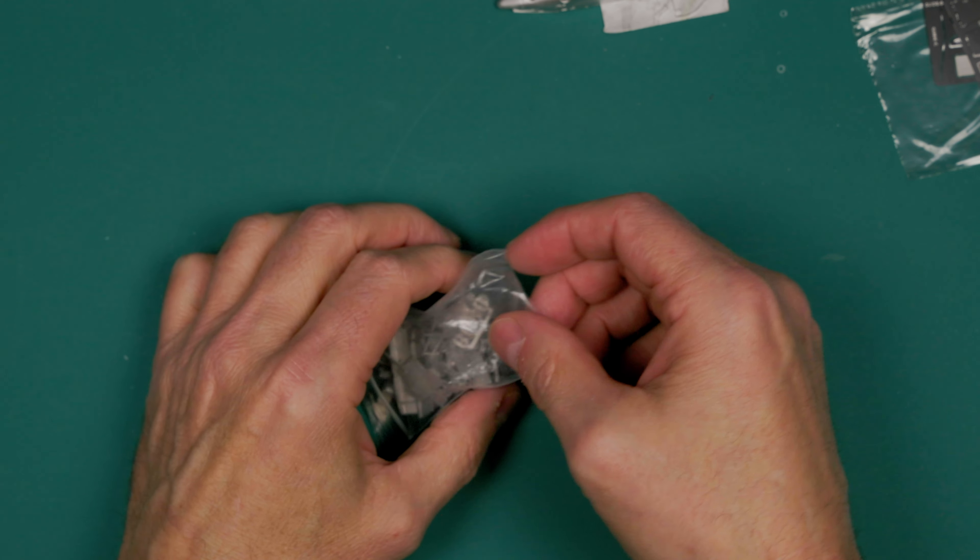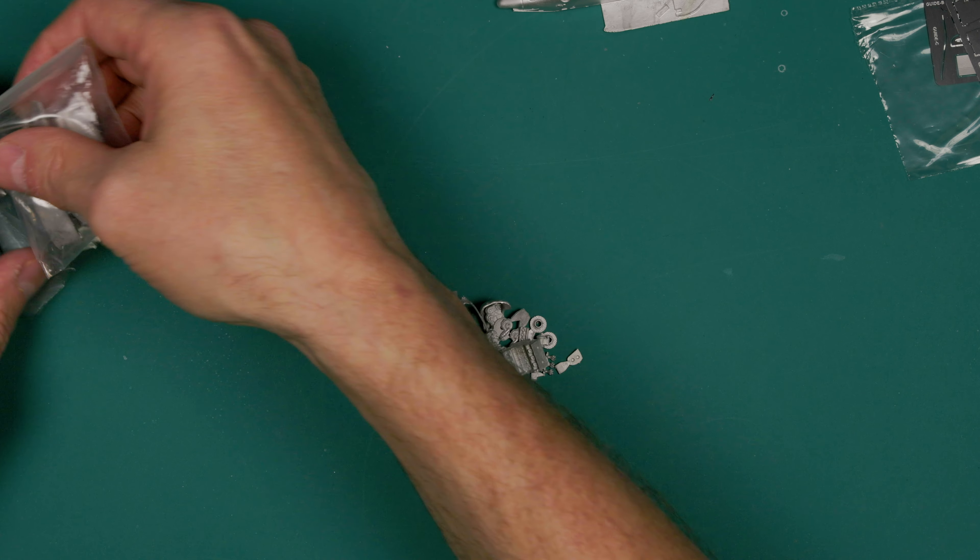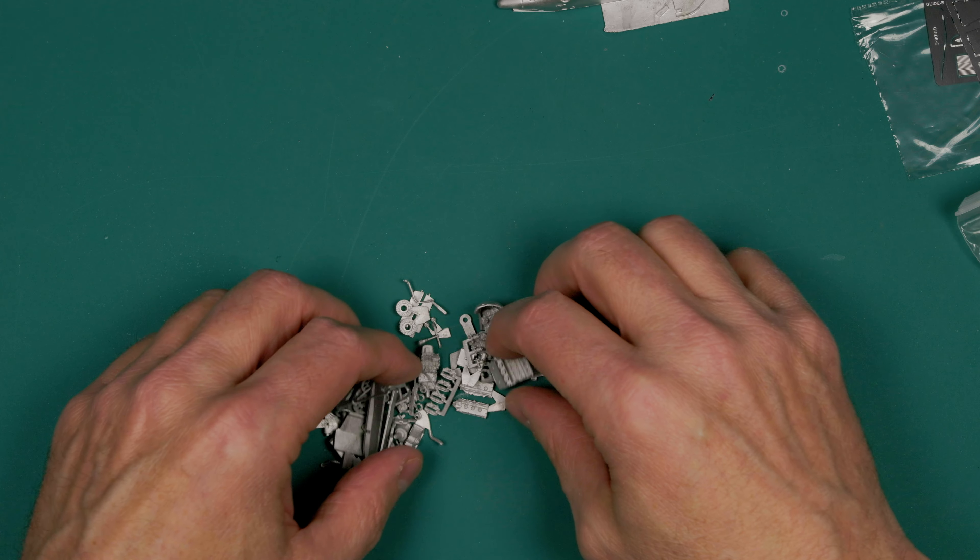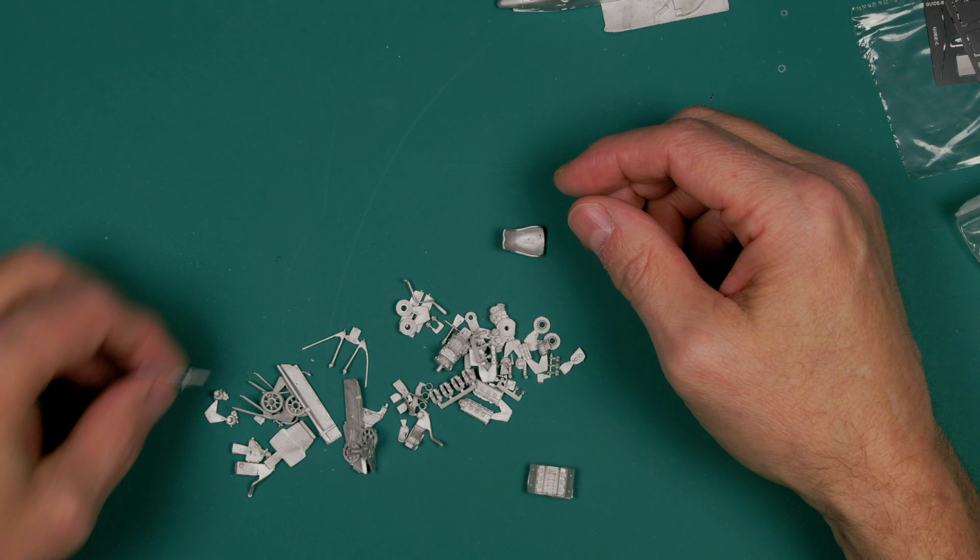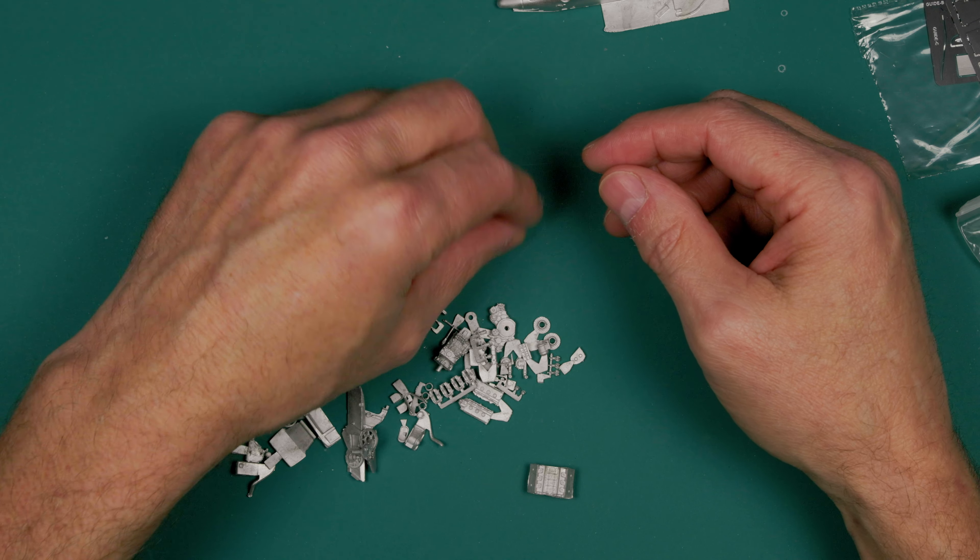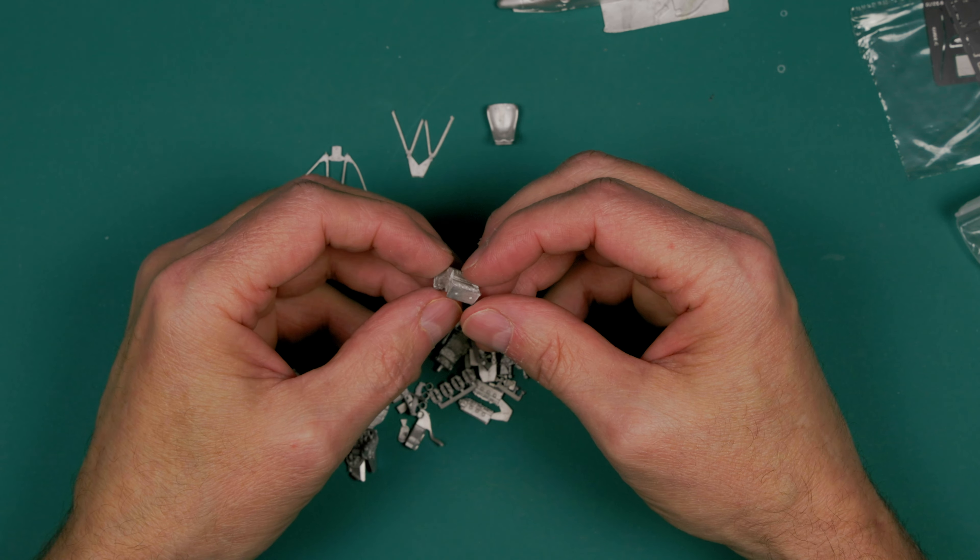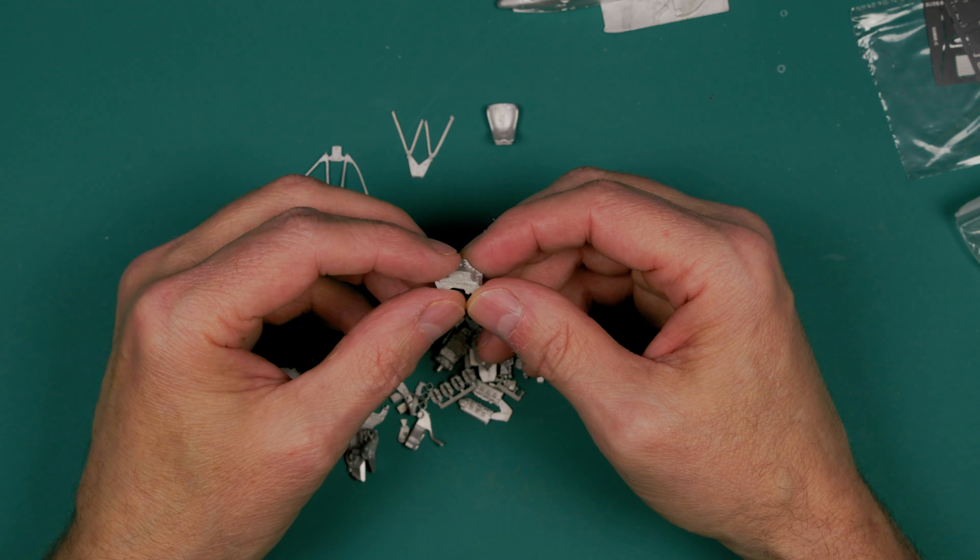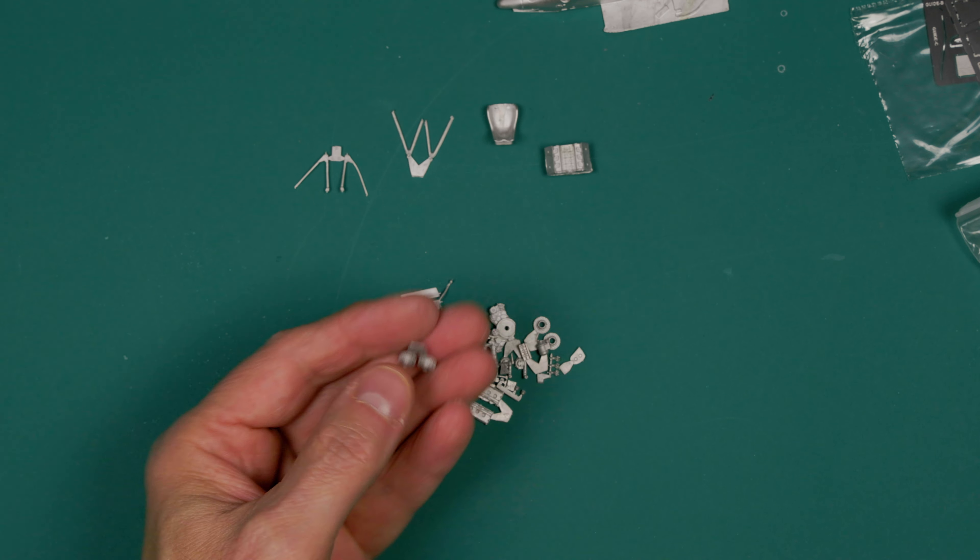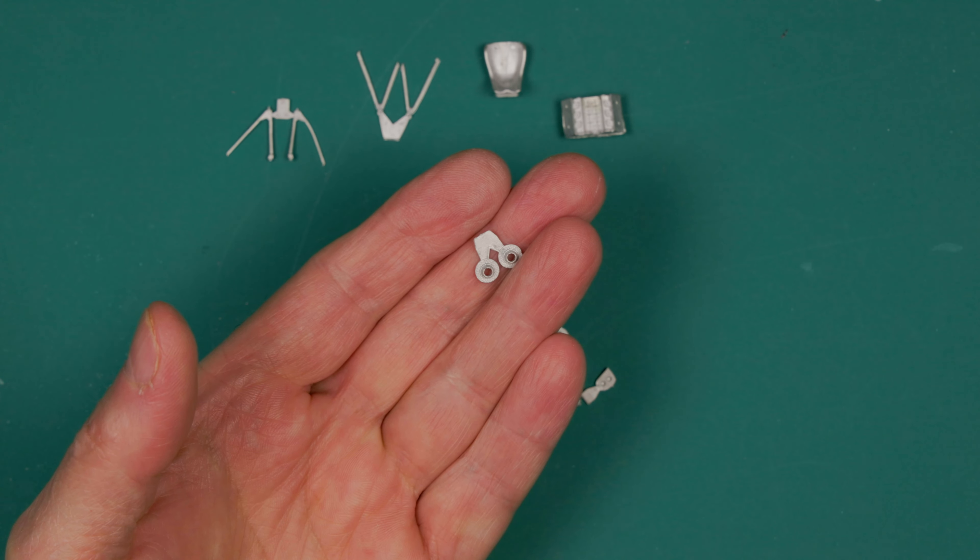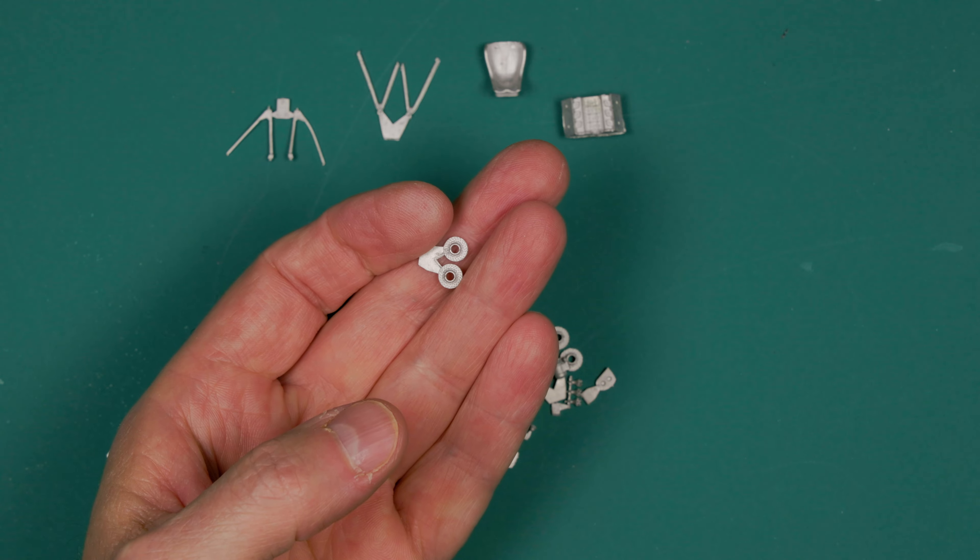But this is where this little kit gets kind of impressive. Spread this out. Let's see what all we get. All the suspension arms. Let's see. There's the engine. V6. Brake rotors.